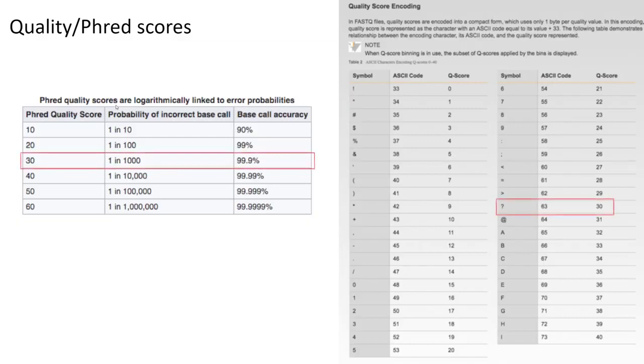So, for example, the question mark character corresponding to the ASCII code 63 here translates to a quality score of 30. A quality score of 30 indicates that the probability that the corresponding nucleotide being incorrect is 1 in 1000 or is 99.9% accurate.